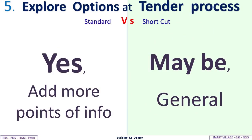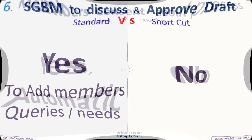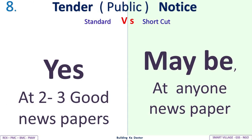Fifth, exploring options at tender process: Standard adds more points of information; shortcut may only cover general points. Sixth, SGBM discussion to approve draft: Standard allows members to add queries and needs; shortcut does not. Seventh, members' consent about process: Standard provides automatic consent; shortcut does not. Eighth, tender public notice: Standard publishes in two to three good newspapers; shortcut may use only one.